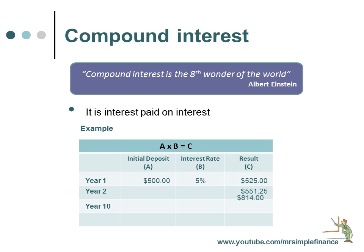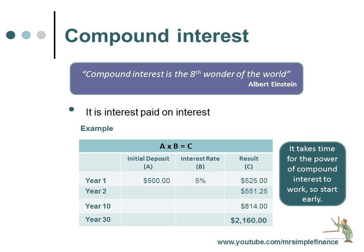By the tenth year we can see that our original $500 has actually grown to $814. And by 30 years, if you are that patient, your capital sum would have grown to $2,160. This is the power of compounding interest.